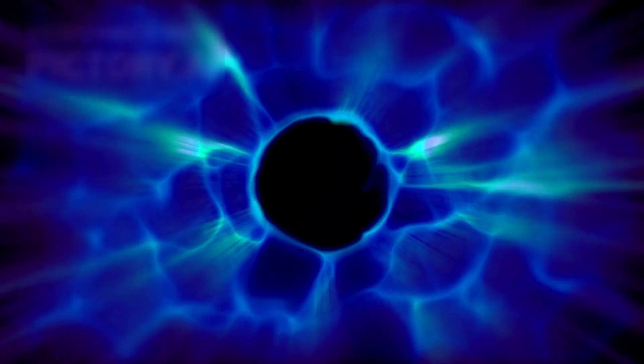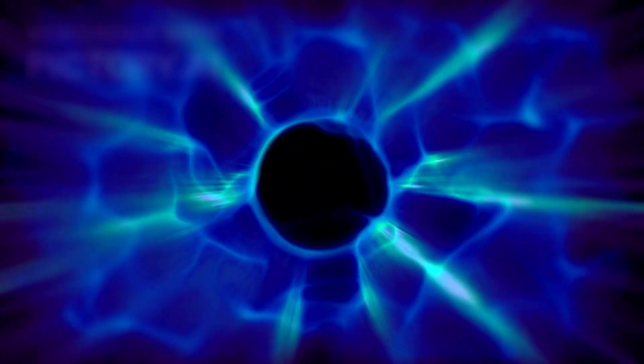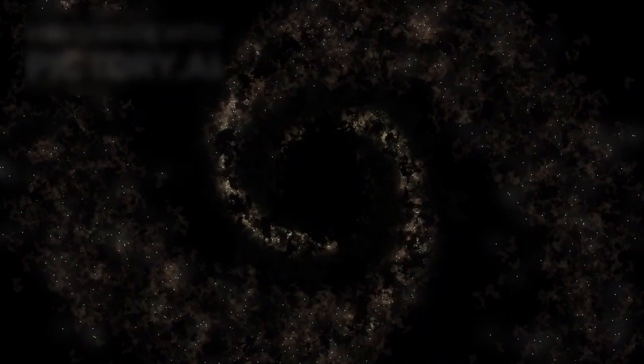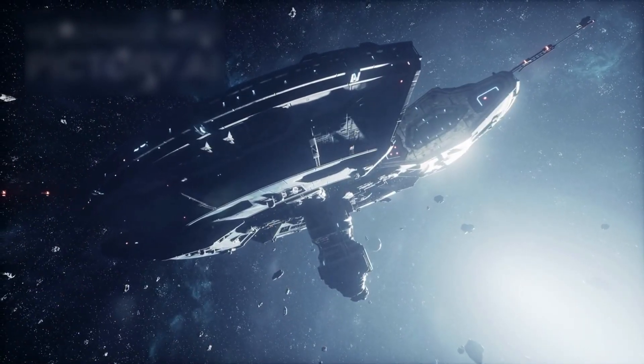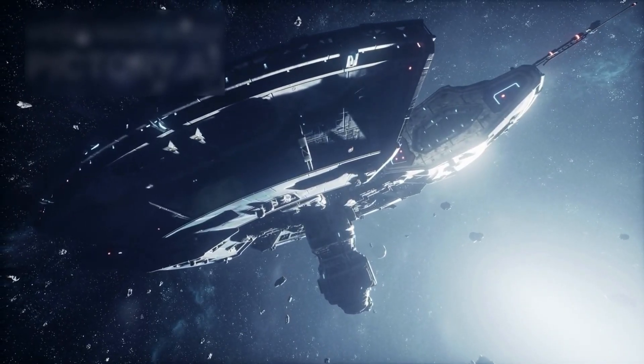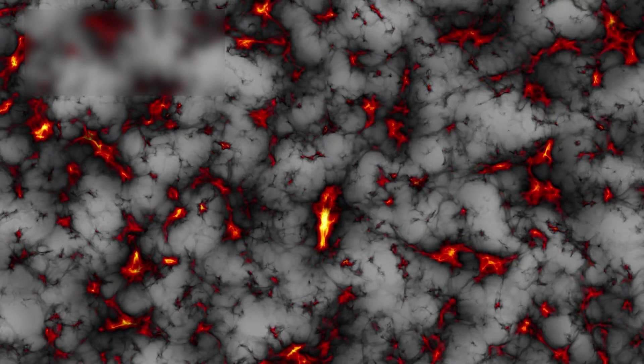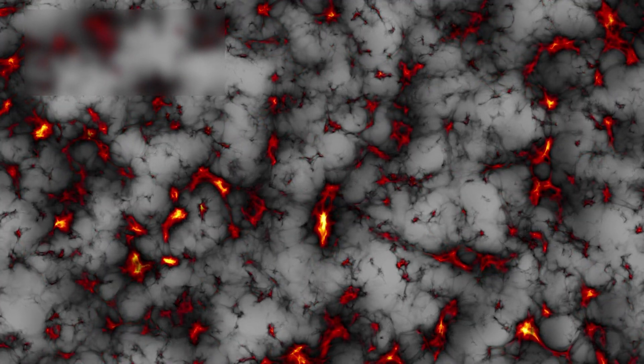Webb was also built to study dark matter, the invisible glue that binds the cosmos. But instead of clarifying, it's deepened the mystery. The galaxies Webb observes are too structured, too perfect for their age, unless something unseen is holding them together. Yet the way they behave doesn't match any model of dark matter we've ever imagined.